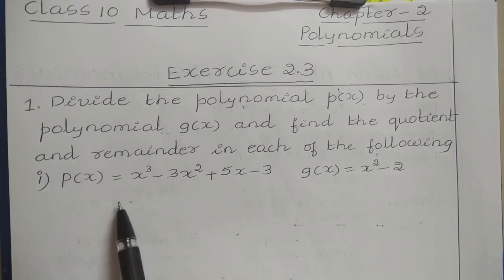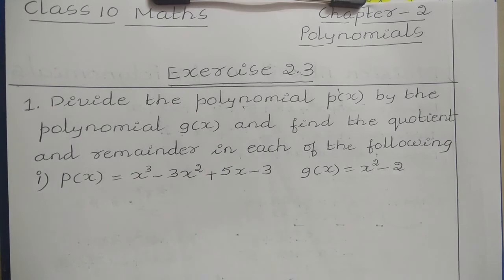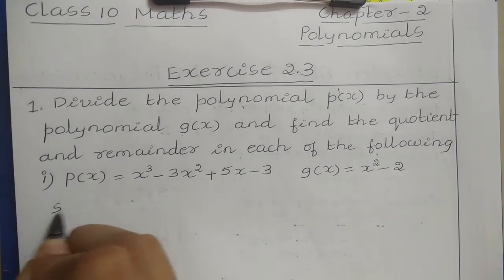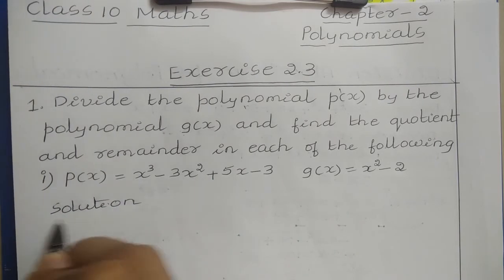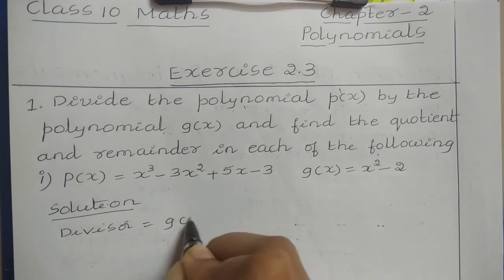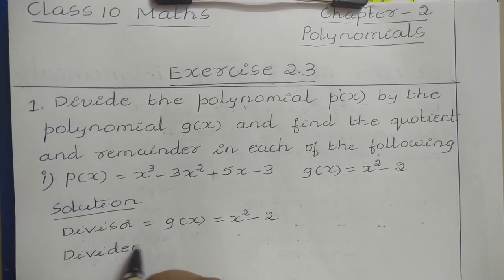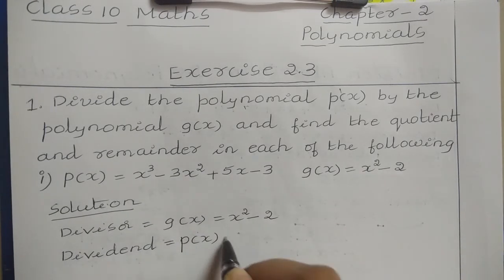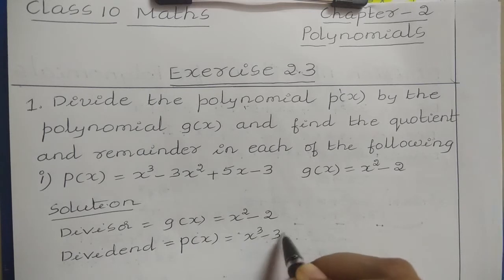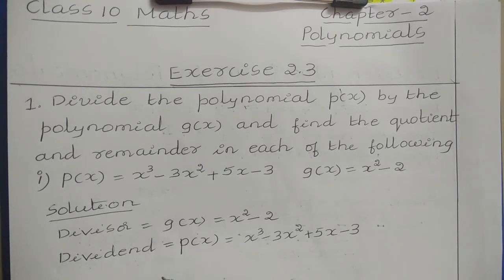They have given two polynomials P of X and G of X. We have to divide the P of X polynomial by the G of X polynomial. So the divisor is G of X, which equals X squared minus 2, and the dividend is P of X, which equals X cubed minus 3X squared plus 5X minus 3. First we need to arrange the divisor and dividend polynomials in decreasing order of their degrees.